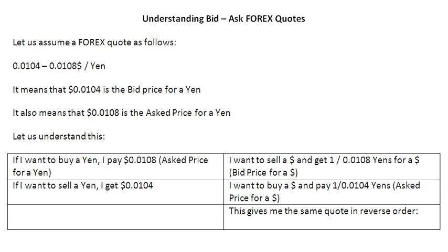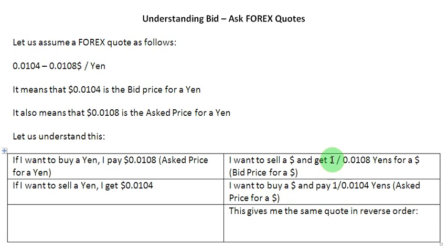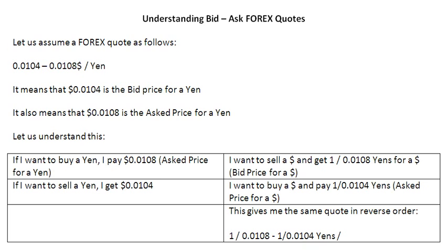So that is pretty simple so far. Now, if you look at this quote — 0.0104-0.0108 dollars to a yen — and if you want to rewrite the same quotation in the reverse order of the currencies, that is in the format of yens to a dollar, you are going to write the bid price for a dollar first, which is 1 over 0.0108, then a dash, and then the ask price for a dollar, which is 1 over 0.0104, followed by yens per dollar. So this becomes the same quotation but in the reverse order of currencies.